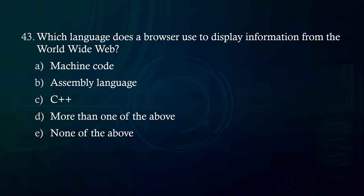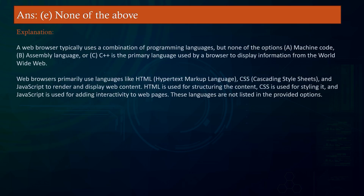Which language does a browser use to display information from the World Wide Web? A. Machine Code B. Assembly Language C. C D. More than one of the above E. None of the above. Answer: None of the above. Explanation: A web browser typically uses a combination of programming languages, but none of the listed options — Machine Code, Assembly Language, or C — is the primary language used. Web browsers primarily use HTML (Hypertext Markup Language), CSS (Cascading Style Sheets), and JavaScript to render and display web content. HTML structures the content, CSS styles it, and JavaScript adds interactivity. These languages are not listed in the provided options.